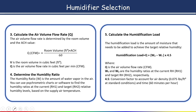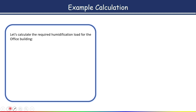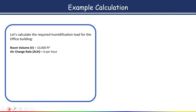Now let's look at an example calculation. We'll calculate the required humidification load for an office building. The room volume is assumed to be 10,000 cubic feet. The air changes rate is 6 per hour, since for an office building the recommended ACH is 4 to 6, so we take 6. The initial relative humidity is assumed to be 30 percent and the desired relative humidity to maintain is 50 percent.